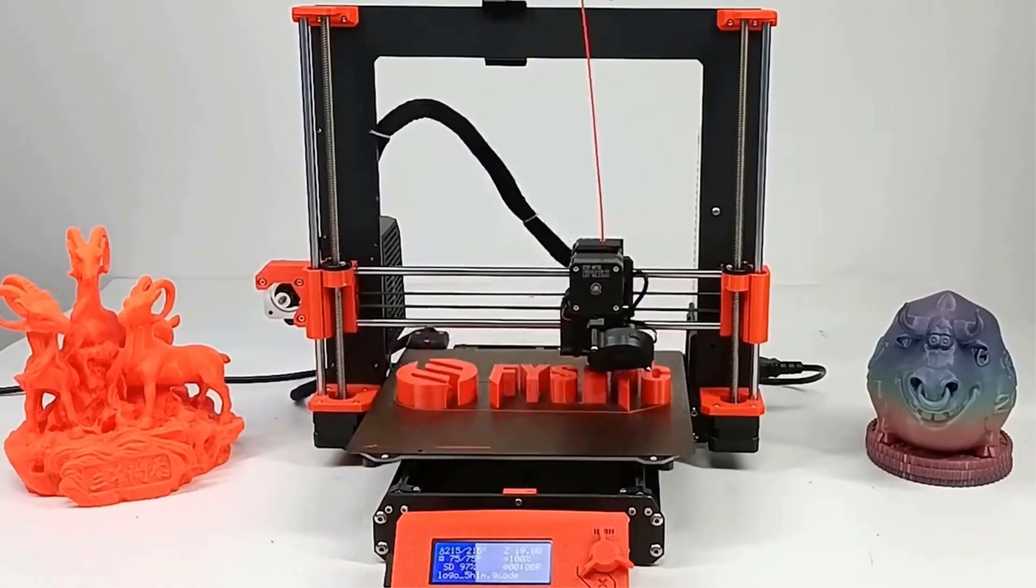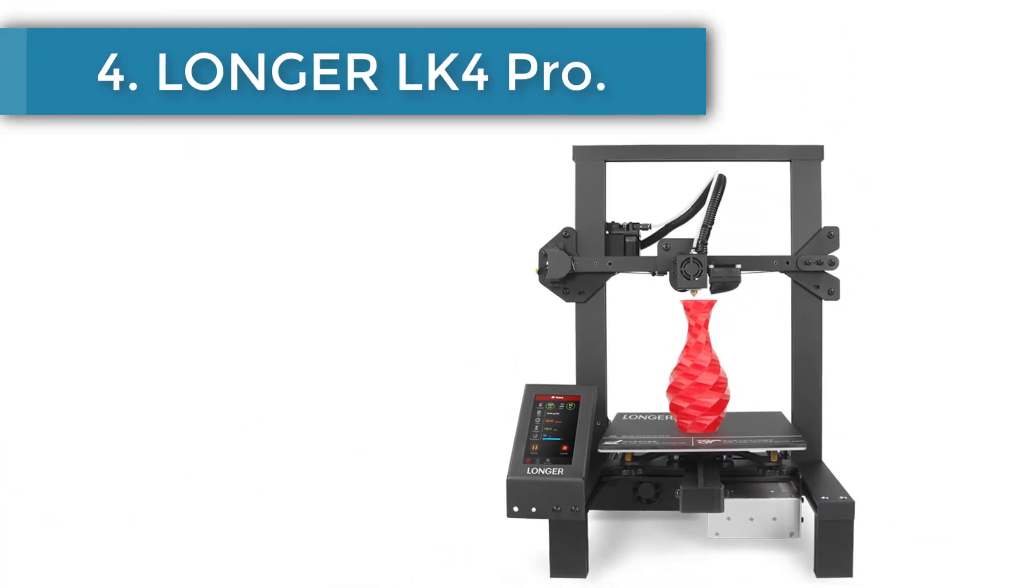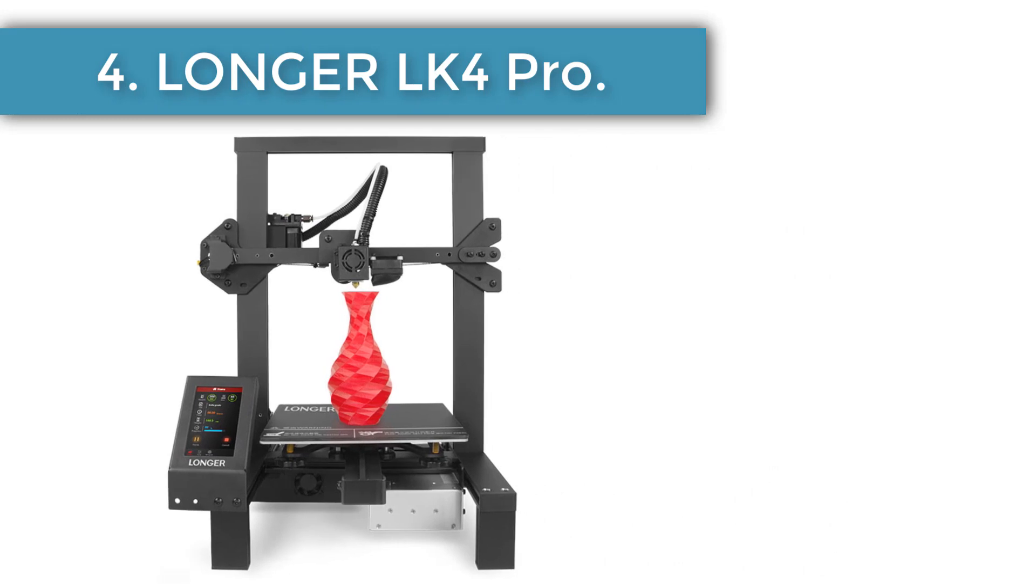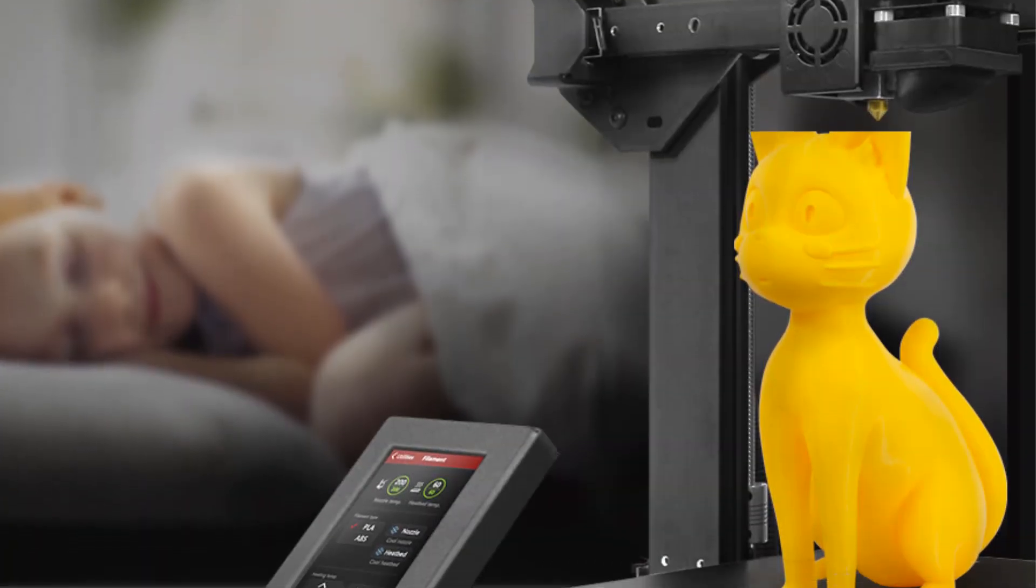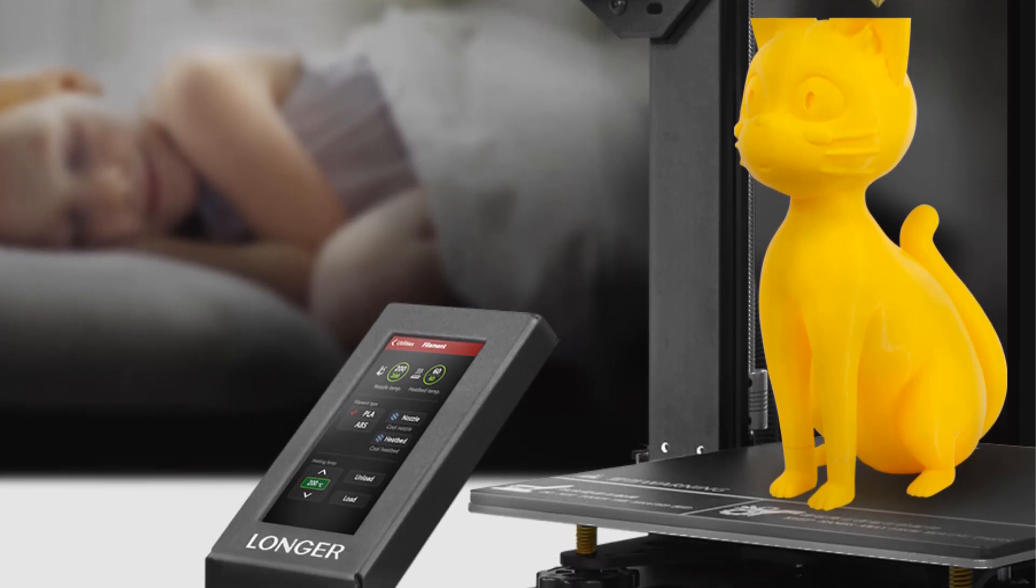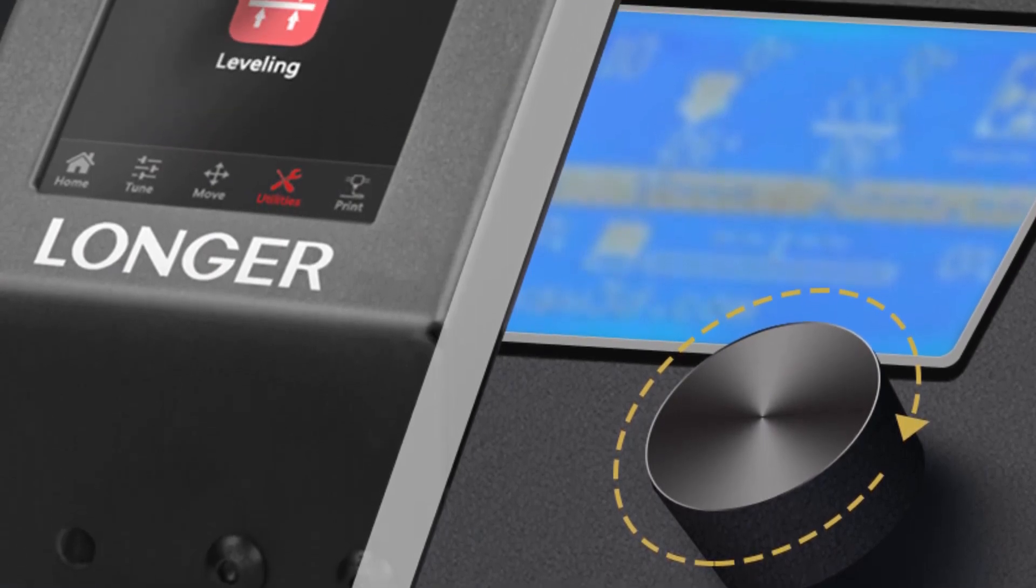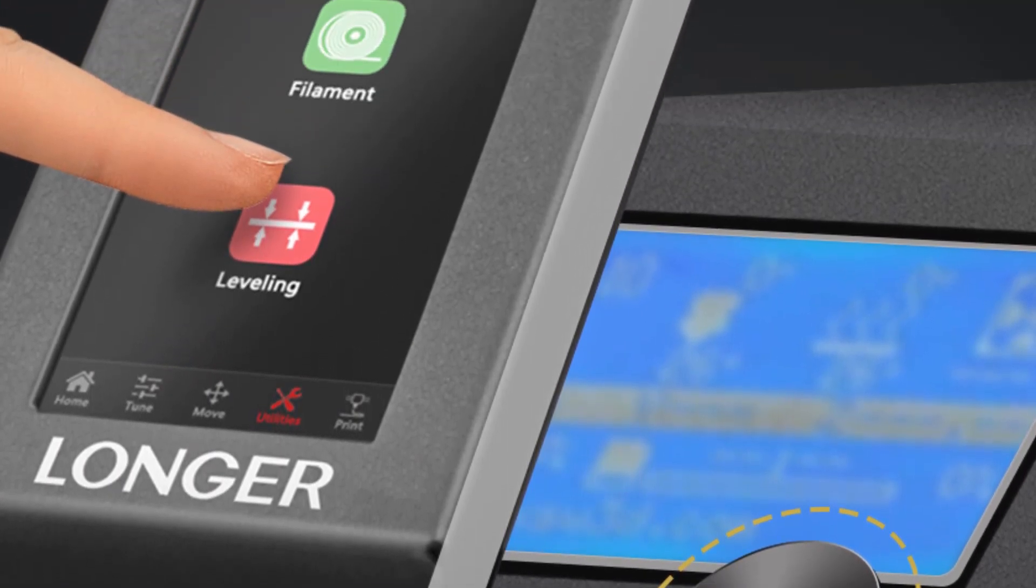Number four: Longer LK4 Pro. Longer LK4 Pro FDM 3D printer is an open source printer for further development and more functionality. It has a 4.3 inch full color touch screen. It is an FDM 3D printer for better user experiences with full metal big size high precision. This is also one of the best cheap 3D printers on AliExpress.